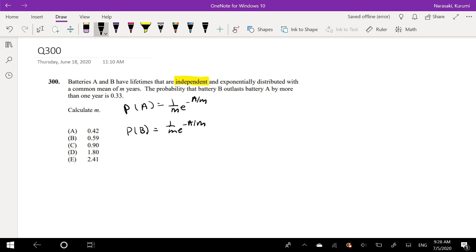What is the probability that battery B will outlast battery A by more than one year is equal to 0.33. Calculate M. Alright.